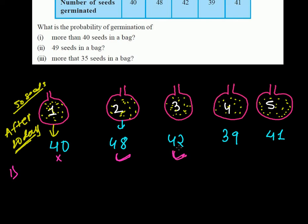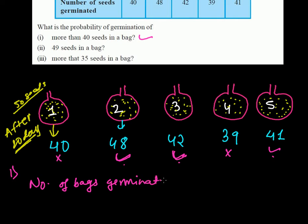42 is again more than 40. 39 is not more than 40, so we cannot take that. And 41 is more than 40. So there were 3 such bags which germinated more than 40 seeds. The number of bags germinated more than 40 seeds is 3, out of the total 5 bags.